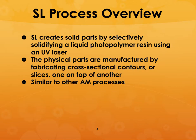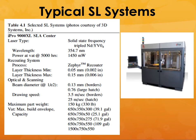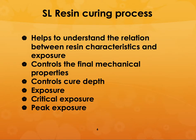This is a typical stereolithography system — this might be from around 2007 or 2008. There are better and cheaper machines available now, but this represents one of the larger machines you might find. In this process, what controls the properties is the reaction between the laser energy and the UV resin. It controls the final mechanical properties, the cure depth, the critical exposure, and the peak exposure.